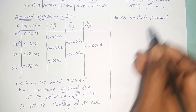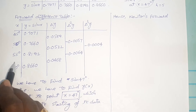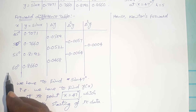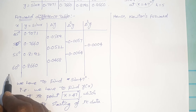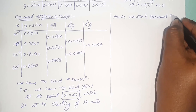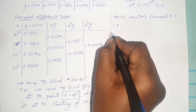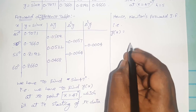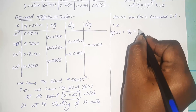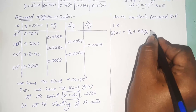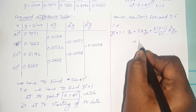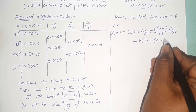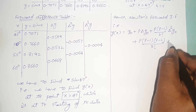Newton's forward interpolation formula for this data is: y(x) = y₀ + p·Δy₀ + p(p−1)/2! · Δ²y₀ + p(p−1)(p−2)/3! · Δ³y₀. Here p = (x − x₀)/h = (47 − 45)/5 = 2/5 = 0.4. Note that p is always positive in Newton's forward interpolation formula.